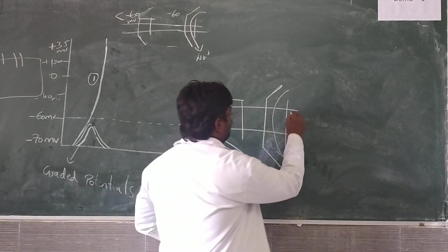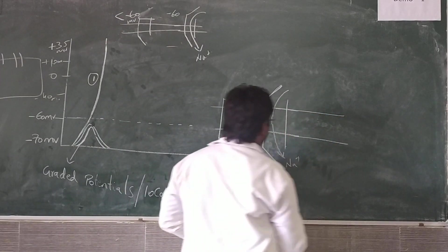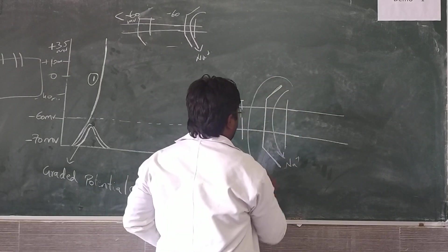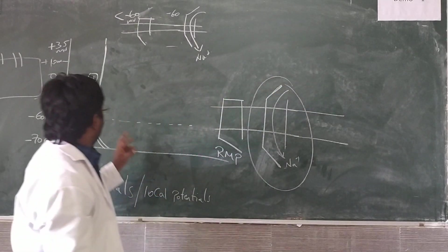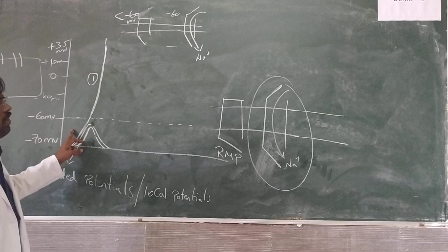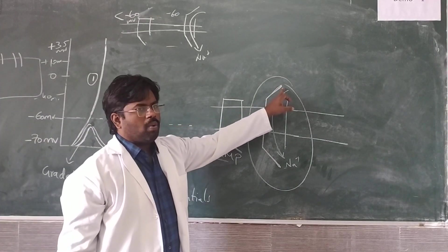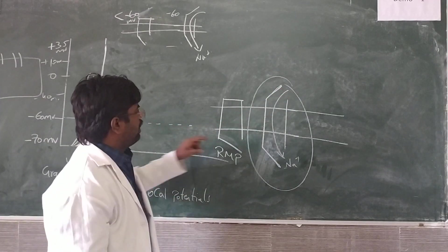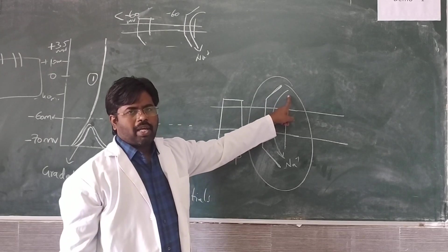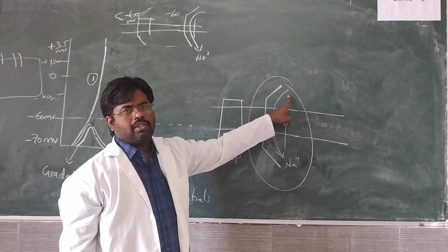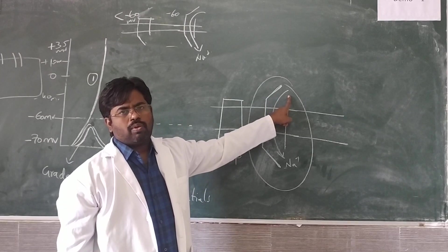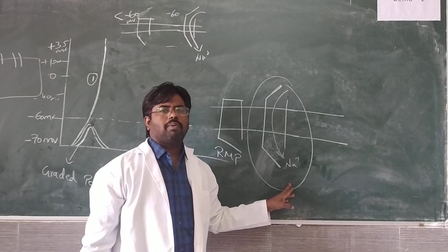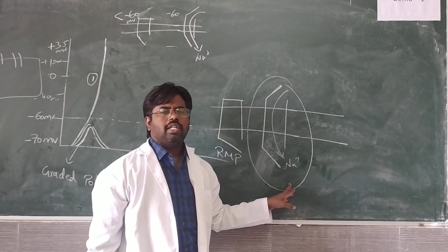This happens during the time of depolarization. The active gate will be opened once the threshold is reached — initially the mechanical gates, then voltage gates, both are open — and there is a sudden rush of sodium ions into the cell.